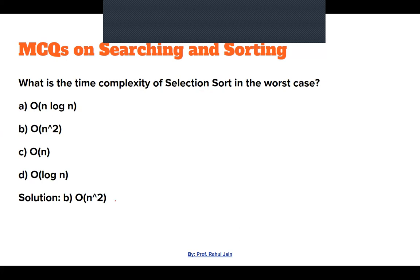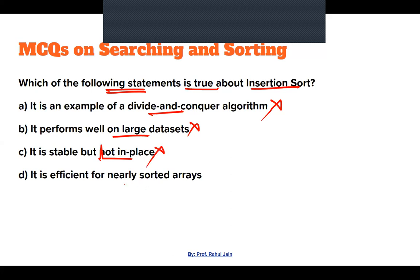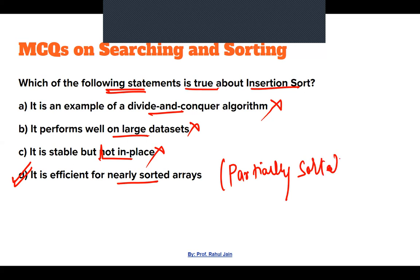Next: Which of the following is true about insertion sort? It is not an example of divide and conquer, it does not perform well on larger datasets, and it is in-place. Option D — it is efficient for nearly sorted arrays — is correct, because if the array is partially sorted, it will take around O(n) time.